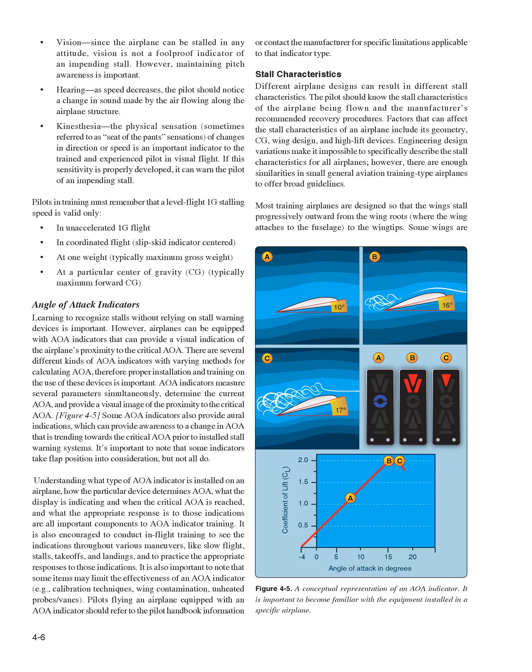Vision: Since the airplane can be stalled in any attitude, vision is not a foolproof indicator of an impending stall; however, maintaining pitch awareness is important. Hearing: As speed decreases, the pilot should notice a change in sound made by the air flowing along the airplane structure. Kinesthesia — the physical sensation, sometimes referred to as seat-of-the-pants sensations — of changes in direction or speed is an important indicator to the trained and experienced pilot in visual flight. If this sensitivity is properly developed, it can warn the pilot of an impending stall.